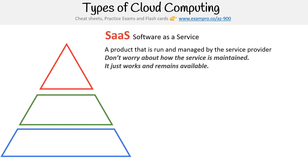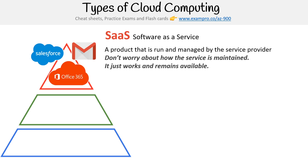SaaS is a product that is run and managed by the service provider. You don't worry about how the service is maintained — it just works and remains available. You probably already are using a SaaS product. Examples of that could be Salesforce, Gmail, or Office 365. These are really for customers who just want to use software, like general software on your computer, but in the cloud.